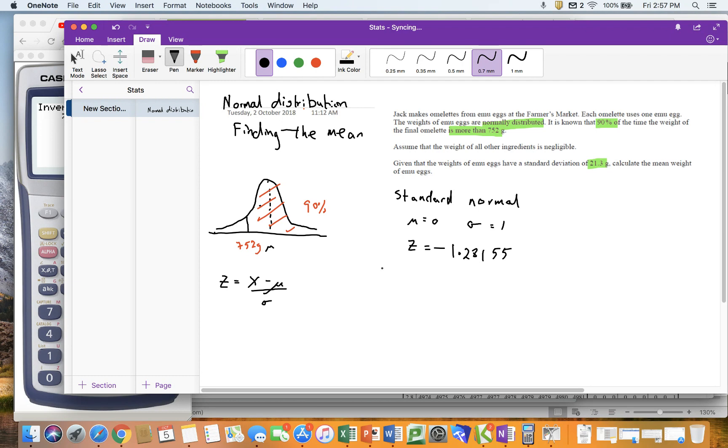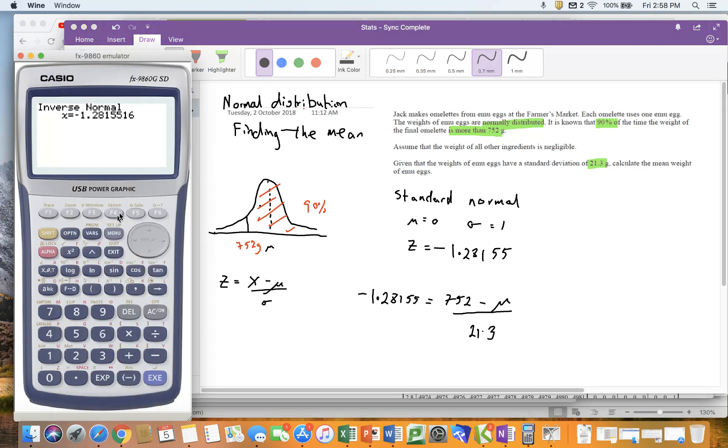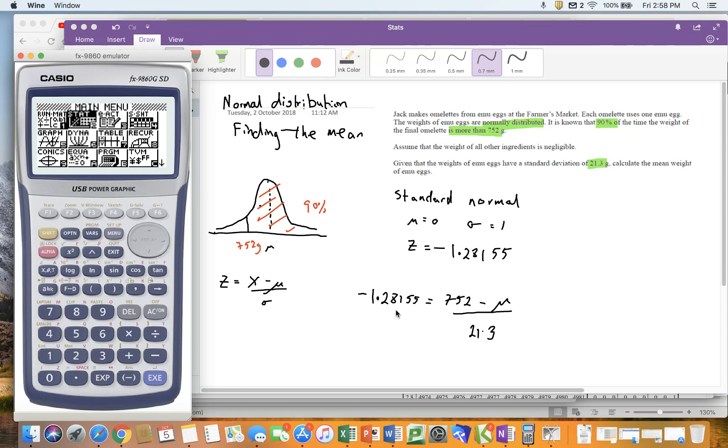So if I pick out all the information I've got, I get minus 1.28155 equals 752 minus my mu, which I still don't know, divided by 21.3. Now, at this point, depending on whether you're good at algebra or not, you can rearrange that and solve. You know, multiply both sides by 21.3, and then go 752 minus whatever you have on this left-hand side equals the mean.